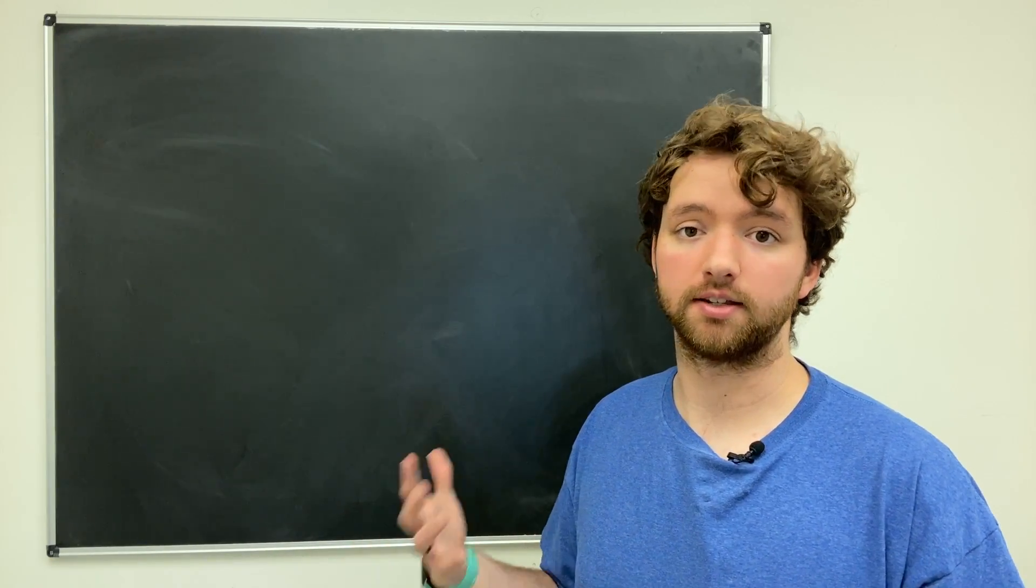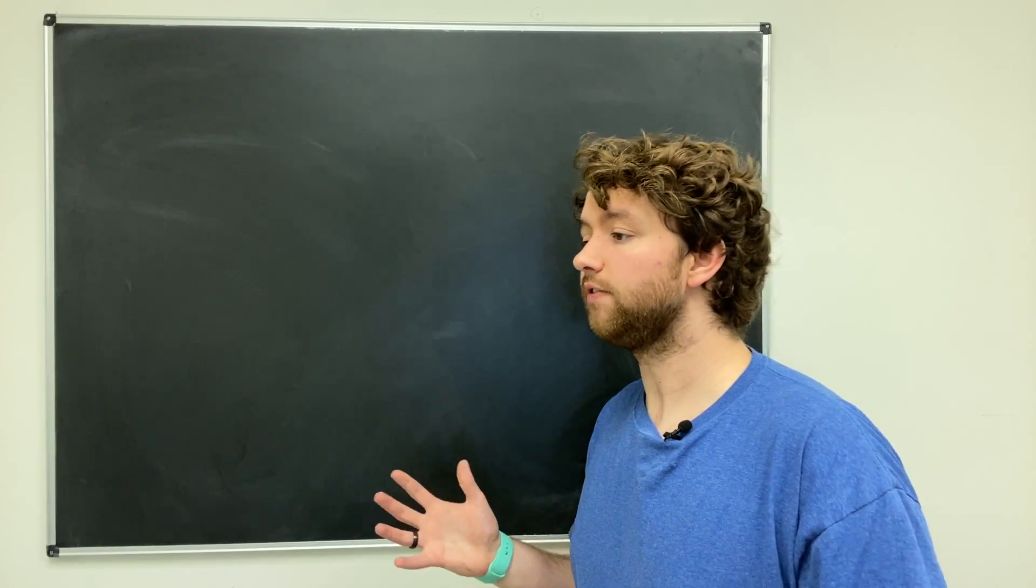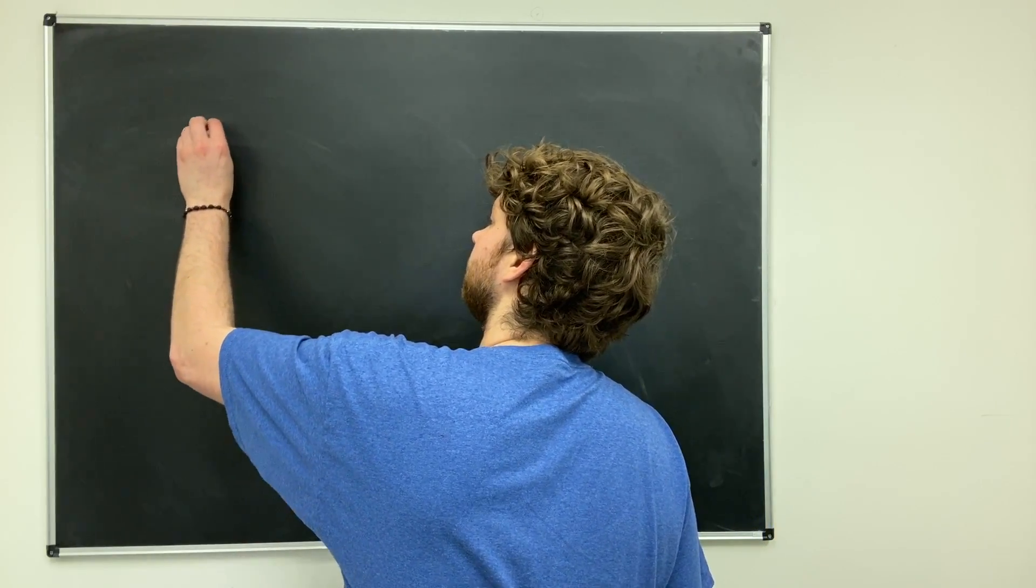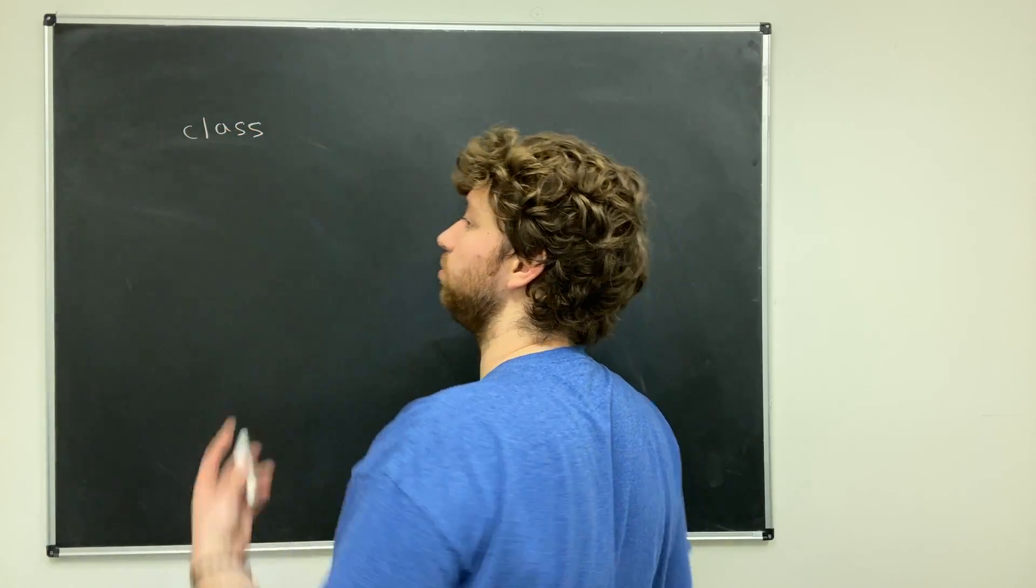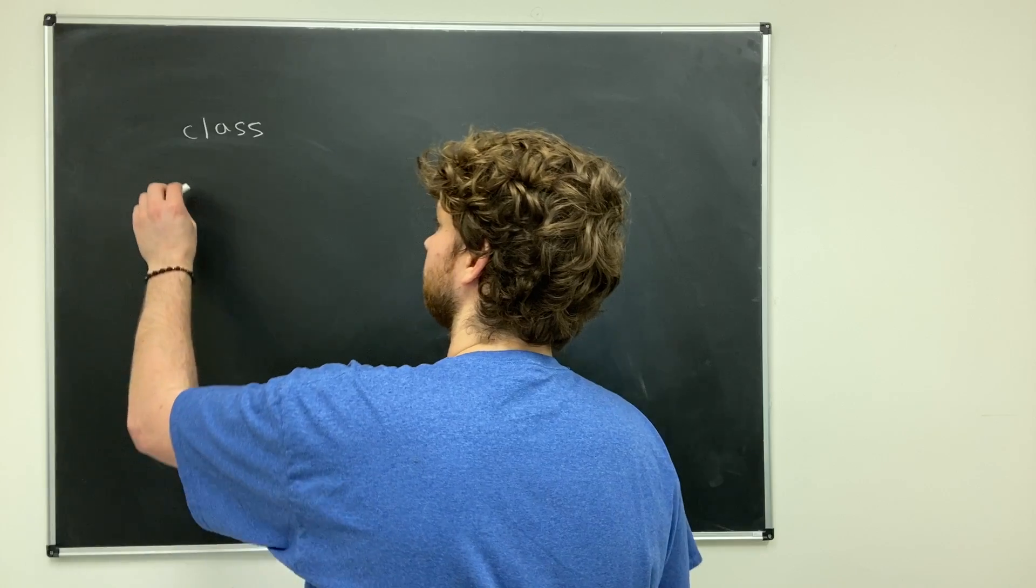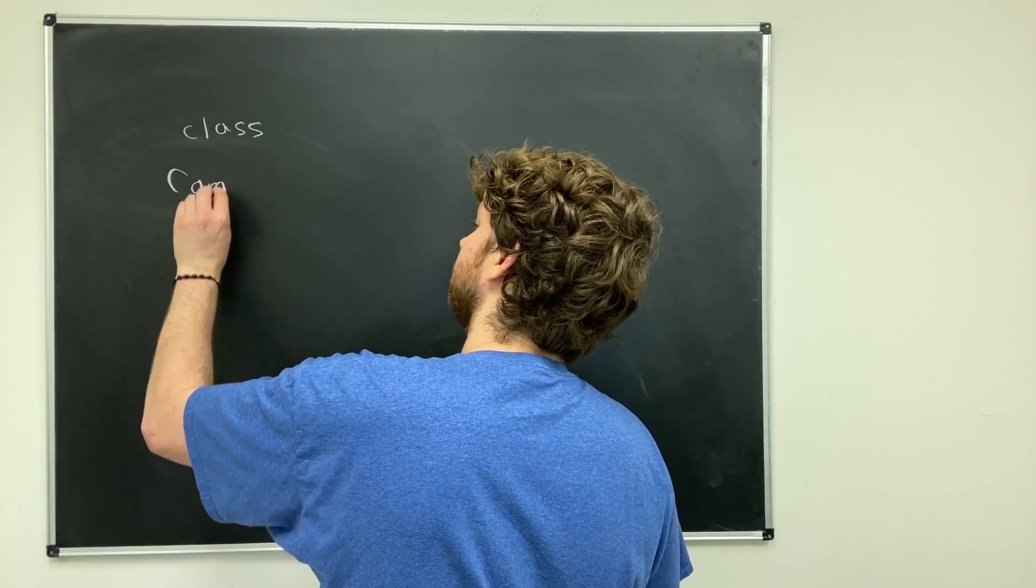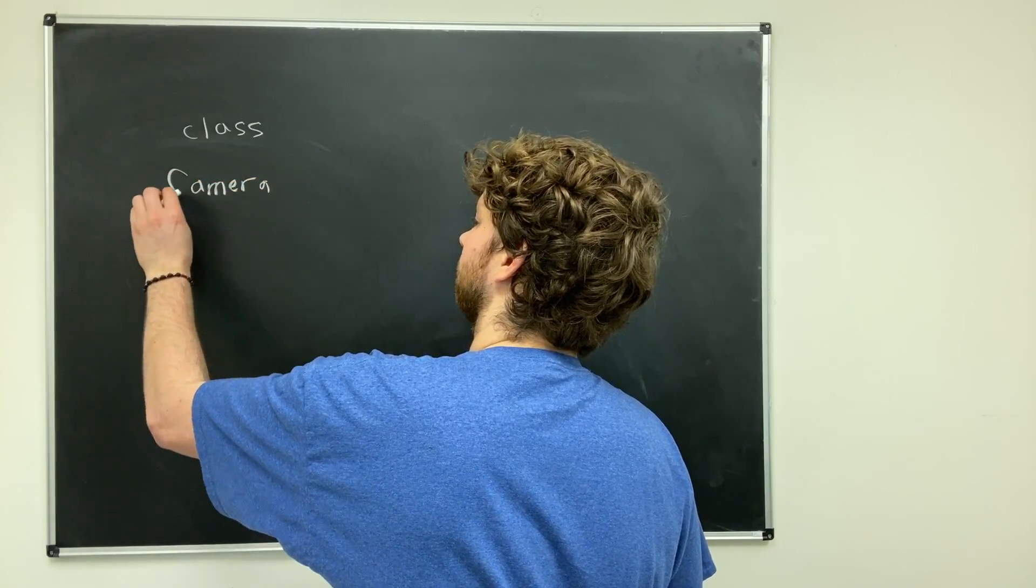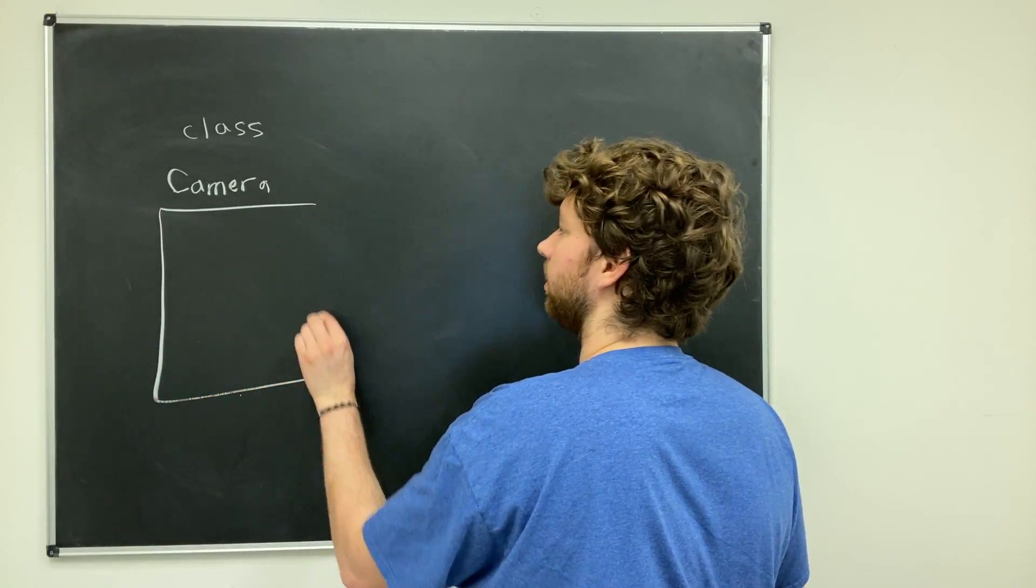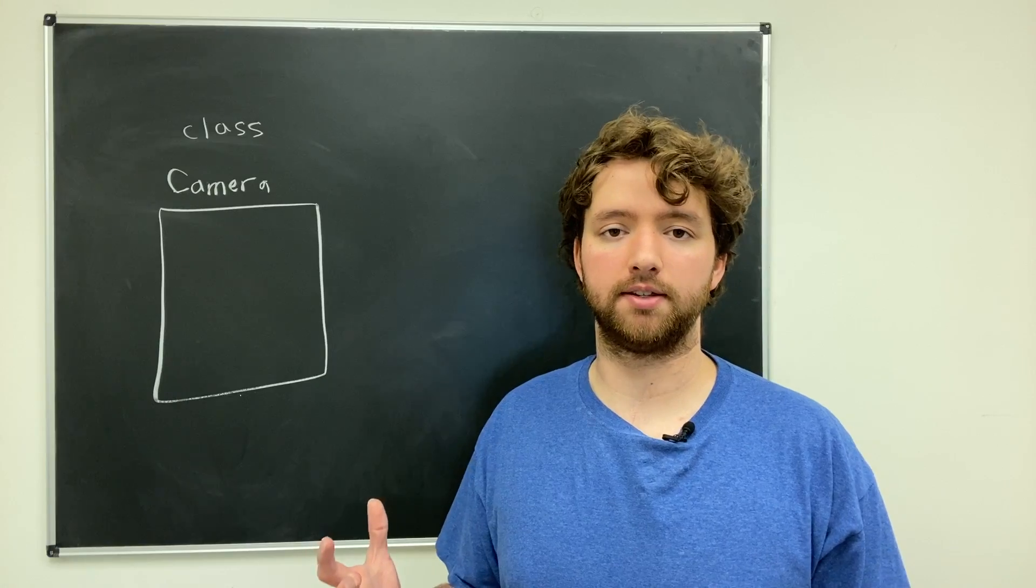The very first thing we do is we create a class. The class is essentially a blueprint or a way to describe what a camera would look like. Typically it'll be whatever we're trying to describe with a capital letter here, and this is going to have two main pieces inside of it.